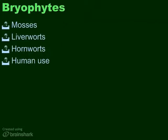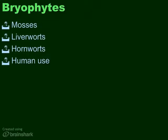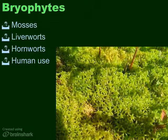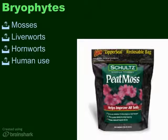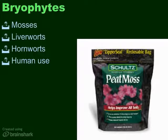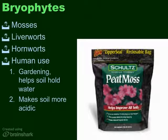Mosses are used by humans quite a bit as well, especially those into gardening. Sphagnum moss is very plentiful, and we discovered that when we dry it out and bag it, it's extremely helpful in keeping moisture in the soil. It also helps lower the pH of the soil, making it more acidic. This is important if you're growing certain plants, like azaleas, that like acidic soil.